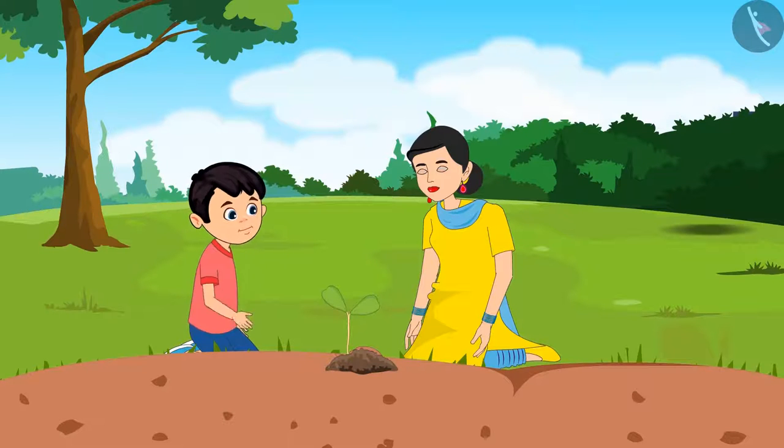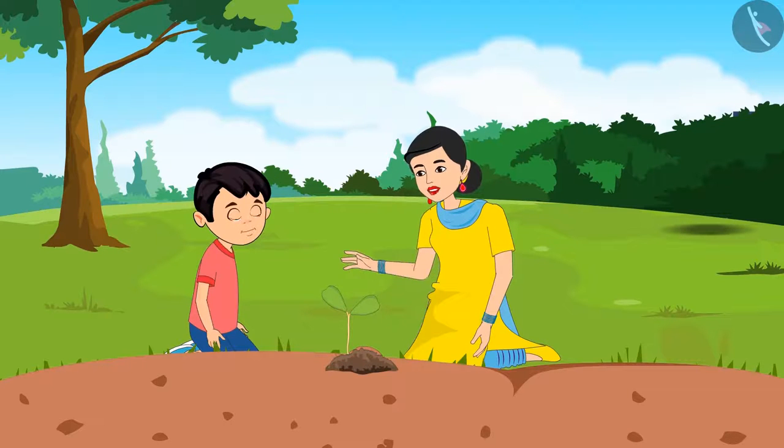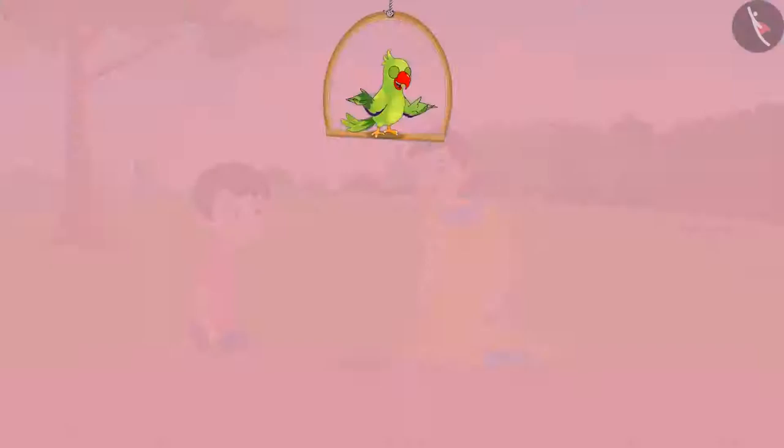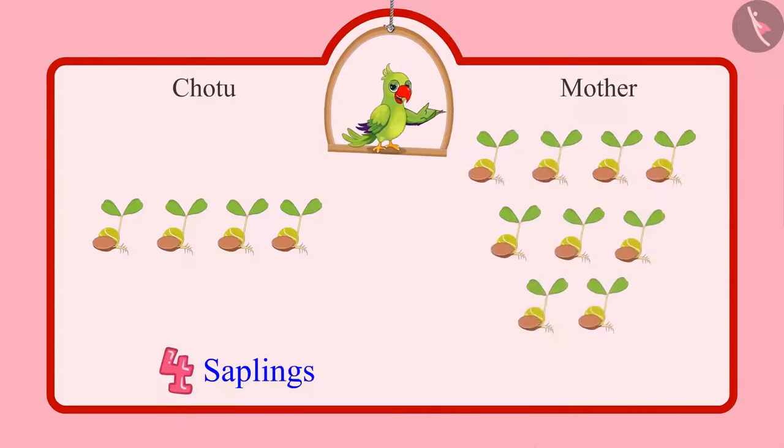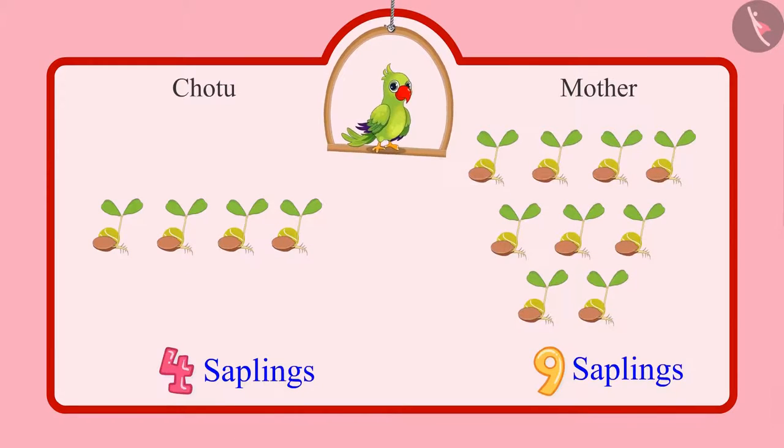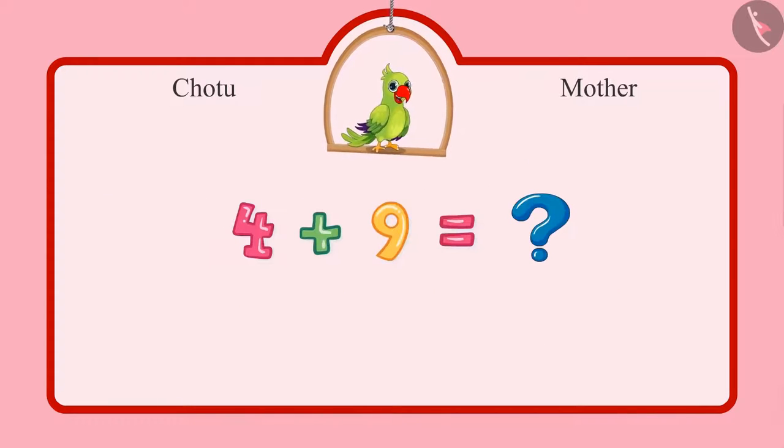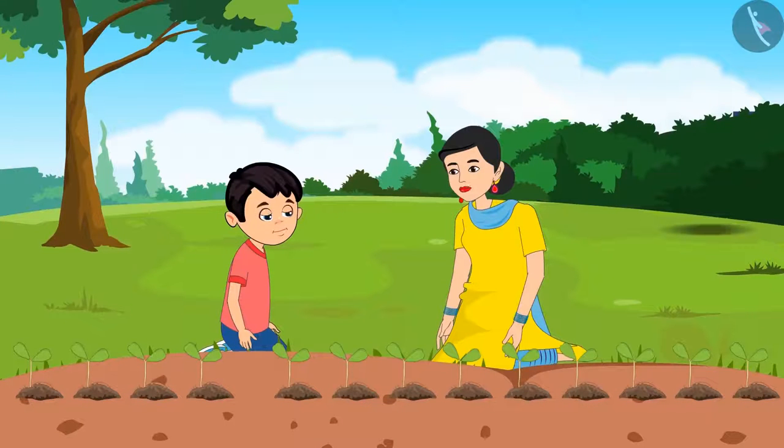Chotu, now you also start planting the saplings carefully. Chotu planted four saplings. Mother planted nine saplings. Can you tell me how many saplings in all did they both plant? Let us see.